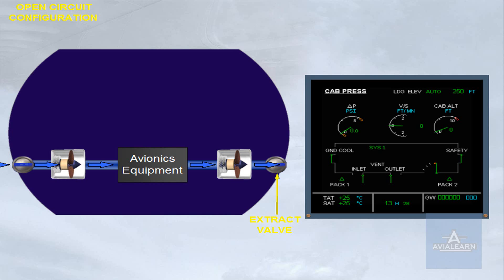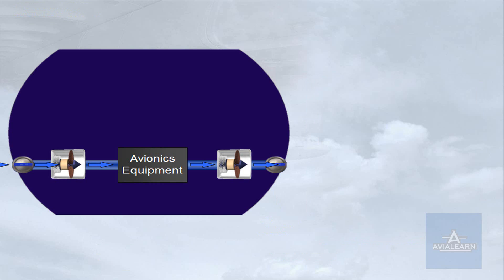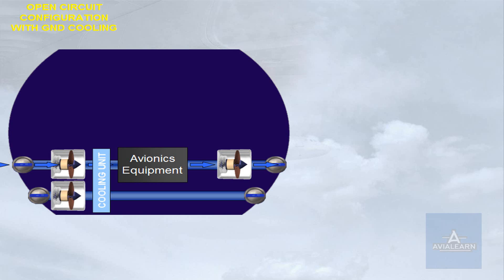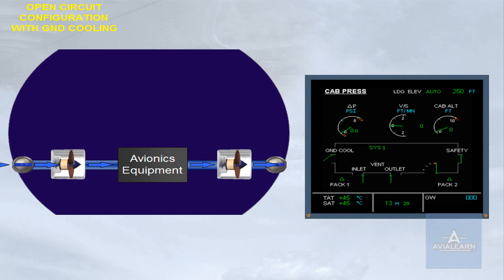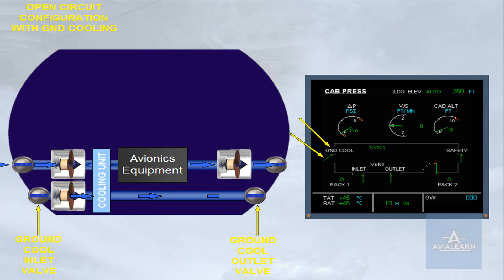Note that in most cases you will see this indication when the aircraft is on the ground. In case of extreme hot air temperature, an optional avionics ground cooling unit can be installed. It ensures the cooling of the avionics ventilation air when the aircraft is on the ground, the engines are stopped, and the ground cool push-button switch is in auto position. The outside air is drawn by the ground cool fan through the inlet valve and the cooling unit, then discharged overboard via the outlet valve. On the ECAM page, the GROUND COOL indication gives the state of the avionics ground cooling system and normally remains white.